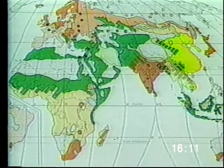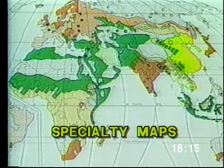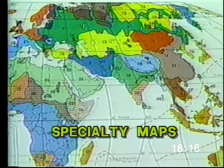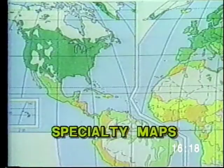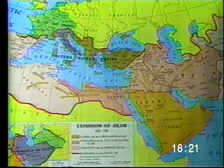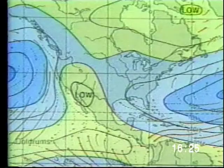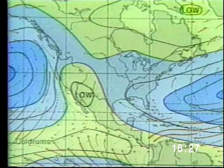Other specialty maps might show such things as the major religions of the world, the major languages spoken, developed nations, the Islamic world, third world nations, or wind and ocean currents. In short, a map can be used to present almost anything you want to show.